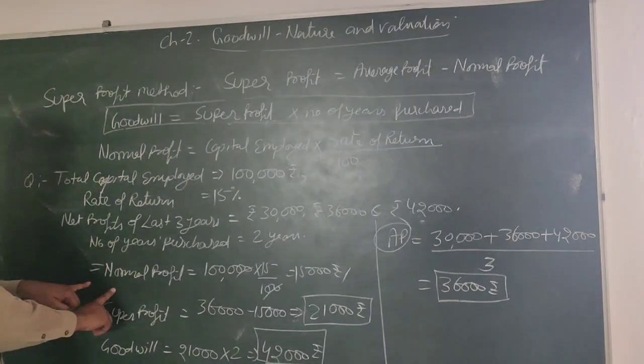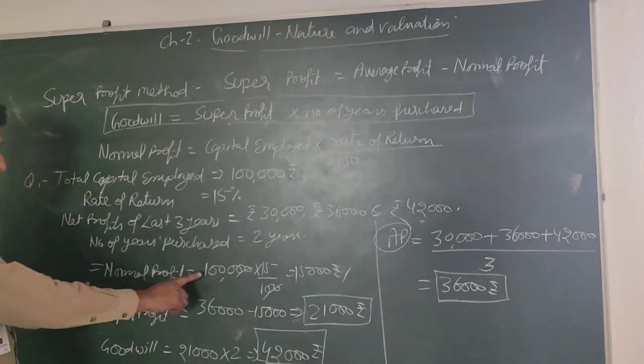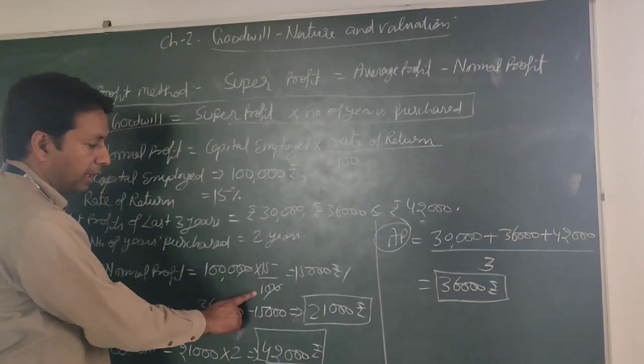Now, normal profit is equal to 15,000. Now we have to calculate super profit as per the formula. So capital employed is equal to 1,00,000 at 15%.